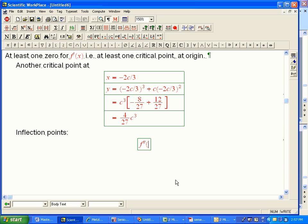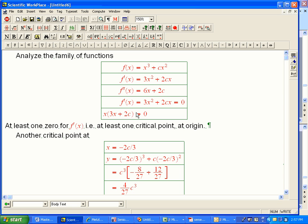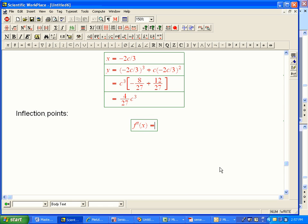What about inflection points? Well, remember f double prime of x was equal to 6x plus 2c. So let's set that equal to 0. And x is going to be minus c over 3. That's actually very nice.